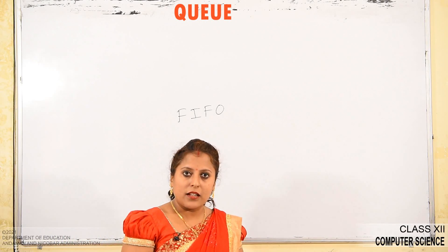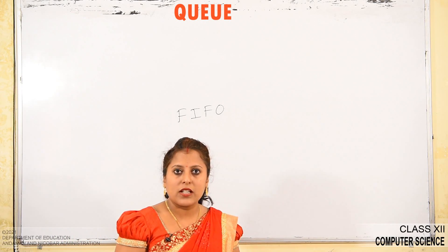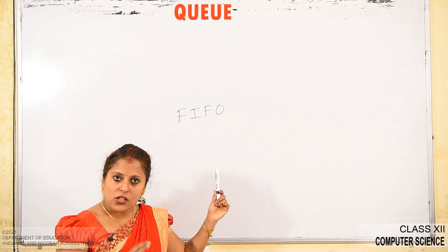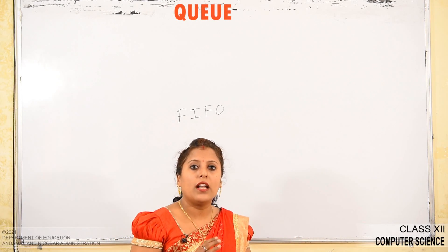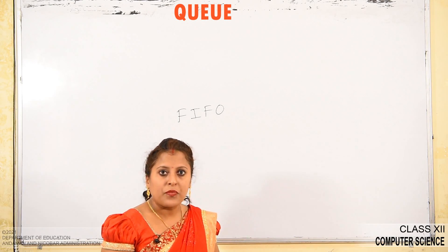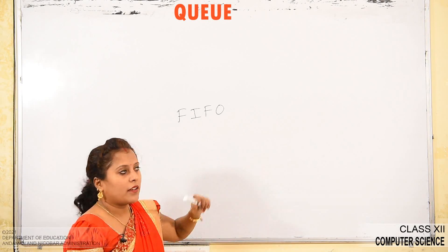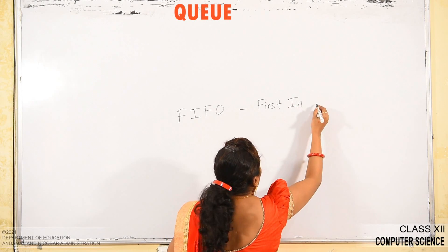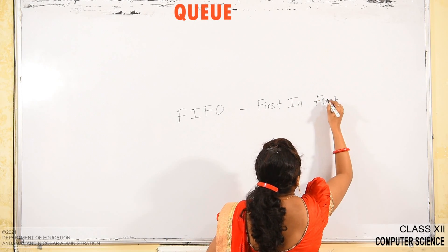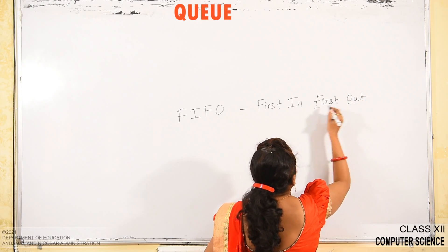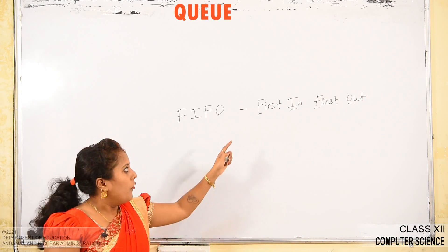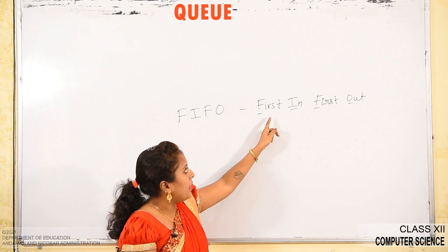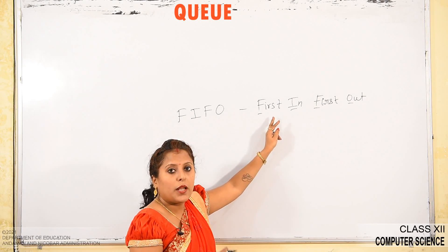In stack, we saw that stack was also a linear data structure, but it was implemented in LIFO — last in, first out. Queue is also a linear data structure which is implemented in FIFO manner. FIFO means first in, first out.